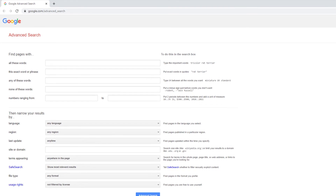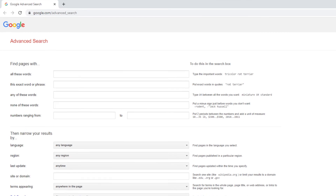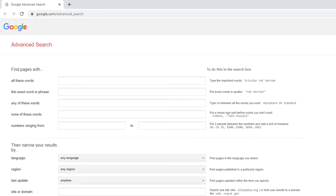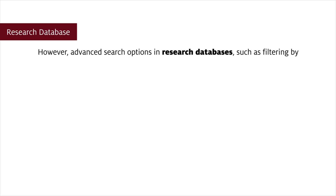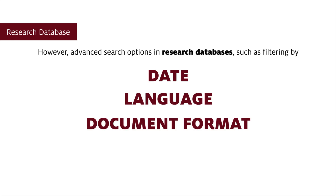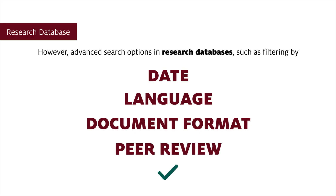Also, while Google offers some advanced searching options, most people don't need to use them to find what they're looking for. However, advanced search options in research databases, such as filtering by date, language, document format, and peer review status, can be effective in retrieving more relevant, precise results.